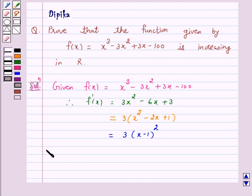Now, f'(x) = 3(x - 1)² ≥ 0 for all x ∈ R, being a perfect square.